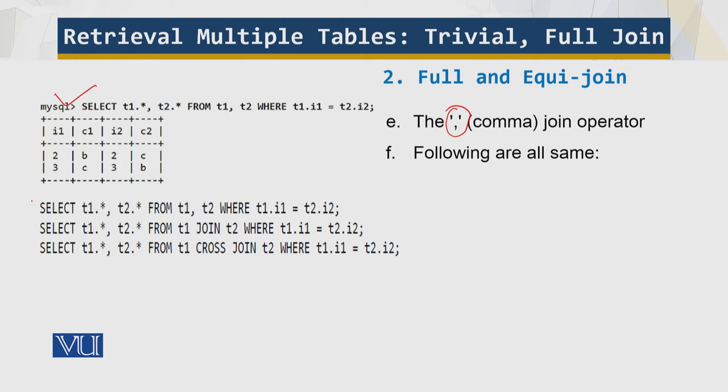This statement, this statement, this, this, they are all the same. There are different ways of getting the same result, but all are employing the comma join over here. And over here, we are explicitly writing join, over here we are explicitly writing cross join. But they are all the same. I believe everybody understands this.